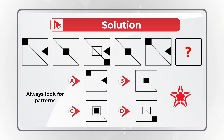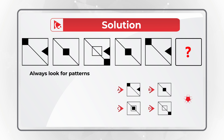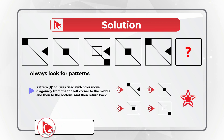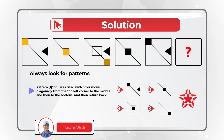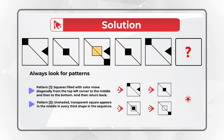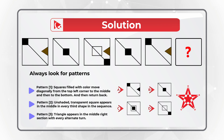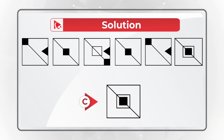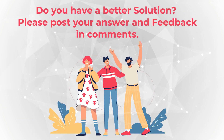If you are a subscriber to this channel, you know you need to always look for patterns. There are 3 different patterns in this problem. The first: squares filled with color move diagonally from the top left corner to the middle, then to the bottom right corner, and then return back. The second: an unshaded transparent square appears in the middle of every third shape. The third: a triangle appears in the middle right section with every alternative shape. The correct choice is the rectangle with a black square and an unshaded transparent square inside the middle, but without the triangle.